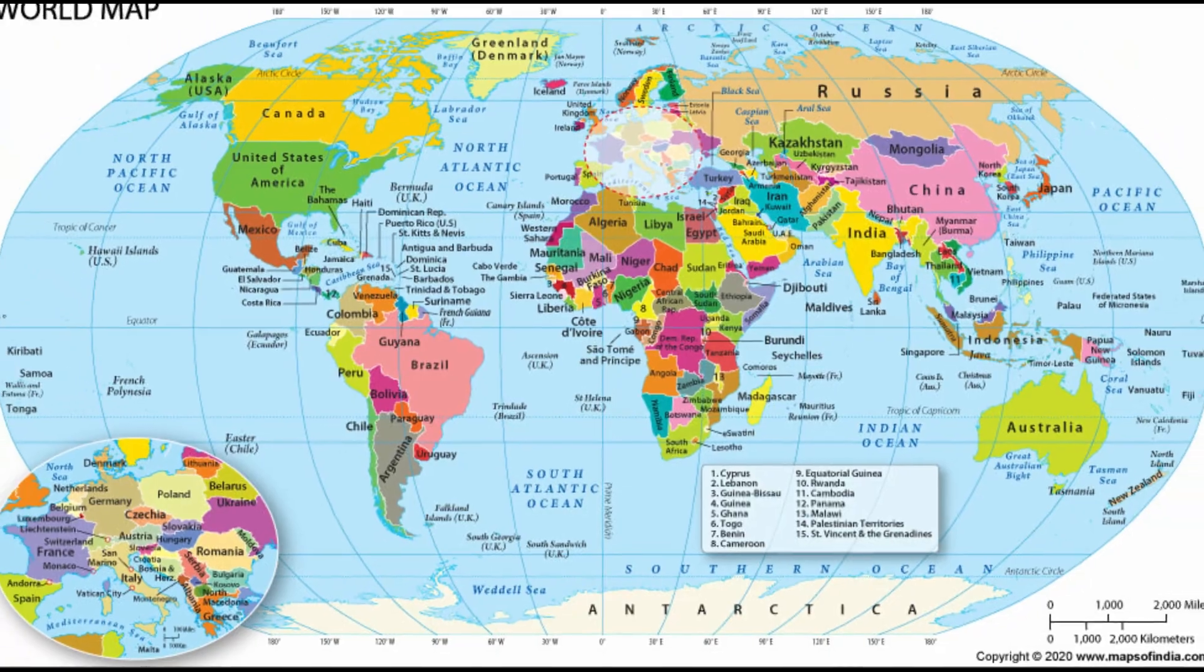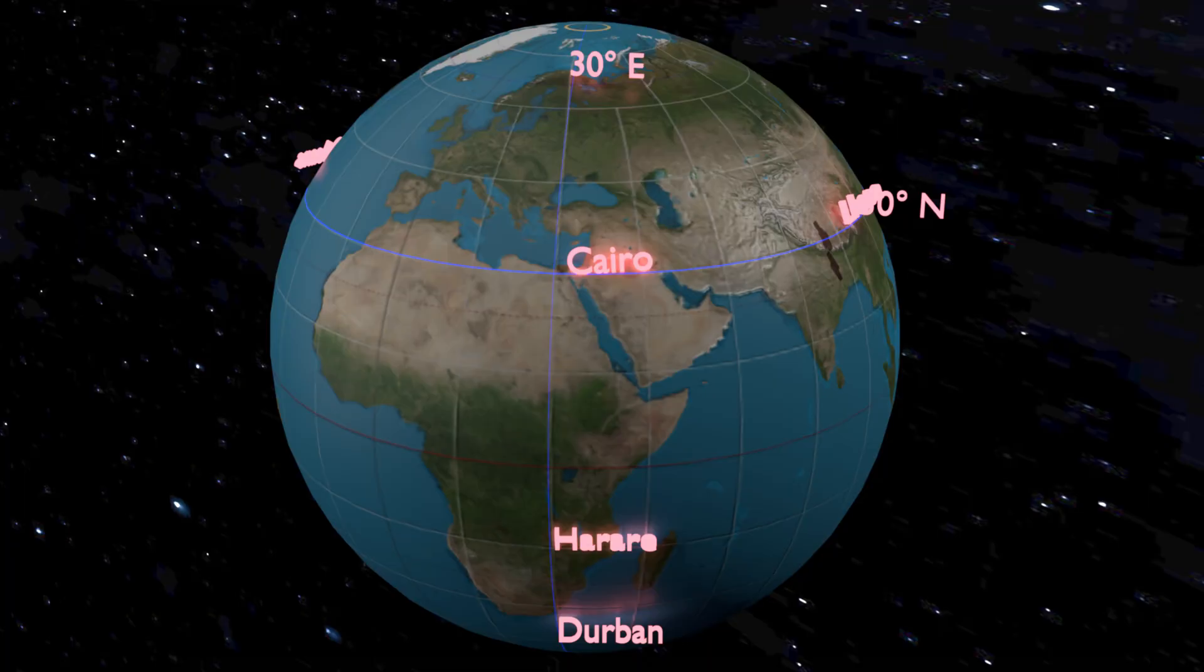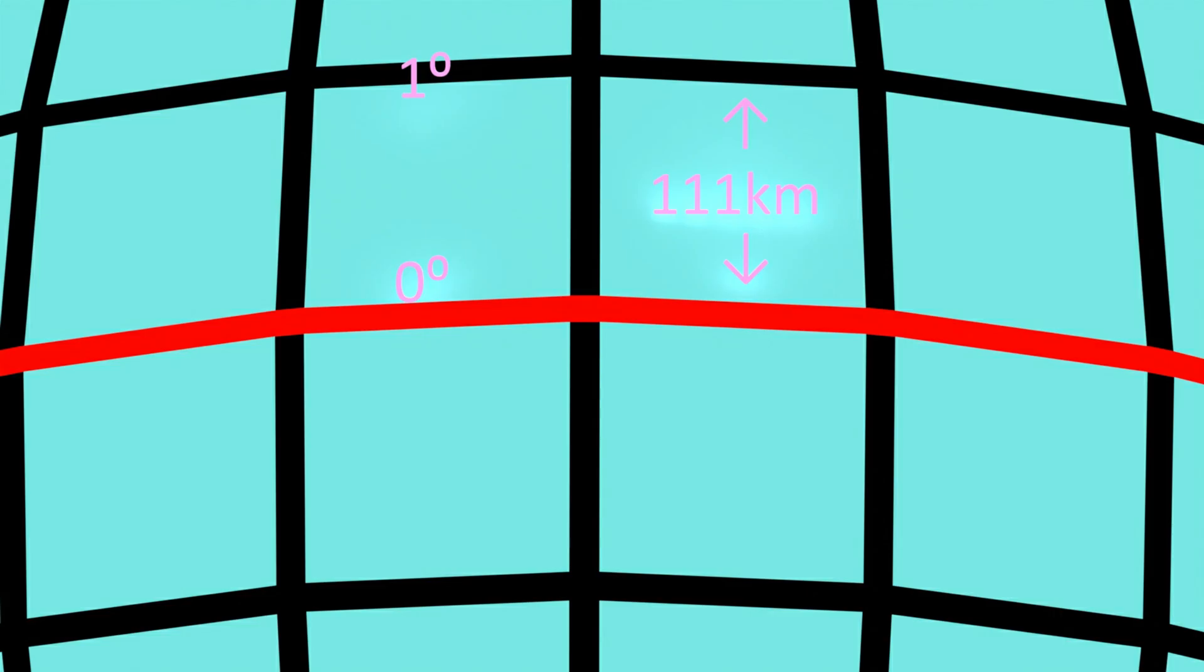Meridians in the Eastern Hemisphere are labeled as 10 degrees east, 25 degrees east, 135 degrees east, etc. While in the Western Hemisphere, they are called 10 degrees west, 25 degrees west, 135 degrees west, etc. 30 degrees east is the semicircle that joins all places at an angular distance of 30 degrees from the prime meridian.